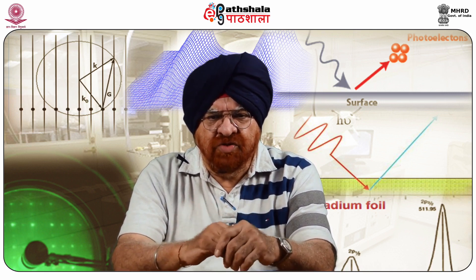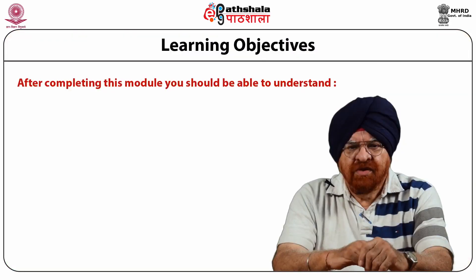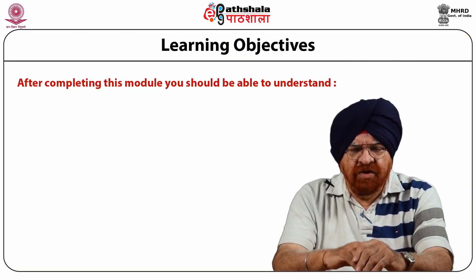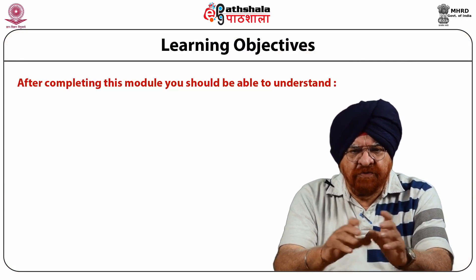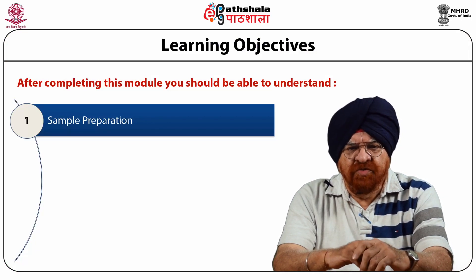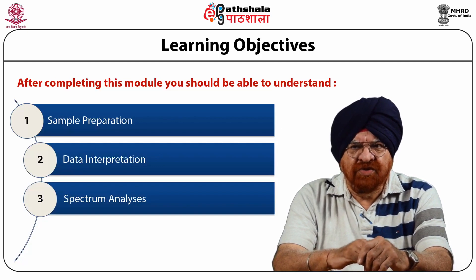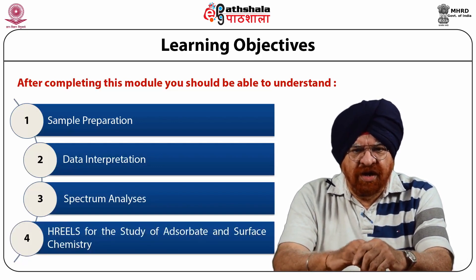In this case, we have given you the introduction and we have talked about the instrumentation. Now, in this module, we shall talk about the way we carry out analysis with the help of this. This comes under the paper Surface Analytical Techniques Part 1. When you complete this module, you will be able to understand: first, what is sample preparation; second, data interpretation; then spectrum analysis; and the next would be HREELS for the study of adsorbate and surface chemistry.